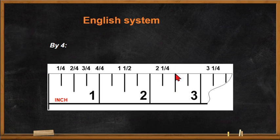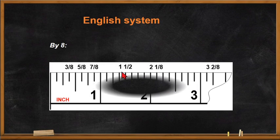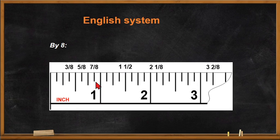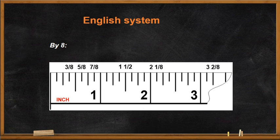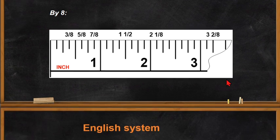By eight means one inch is divided into eight graduations: one-eighth, two-eighths, three-eighths, four-eighths — which reduces to one-half — five-eighths, six-eighths, seven-eighths, and eight-eighths which equals one. Then the next inch continues: one and one-eighth, one and two-eighths, and so on. Always reduce fractions to their lowest term.